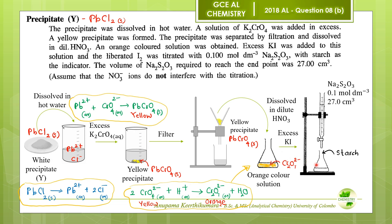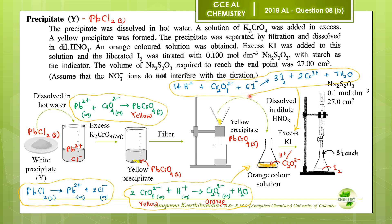Excess KI solution was added to this dichromate solution, and the liberated iodine was titrated with 0.1 mol dm⁻³ sodium thiosulfate solution. The volume of sodium thiosulfate required to reach the end point was 27 cm³. Two reactions take place: first, between potassium iodide and dichromate ions in the acidic medium. During this reaction, iodide ions are oxidized to iodine while dichromate ions are reduced to Cr³⁺ ions. The solution contains produced iodine and chromium 3+ ions.